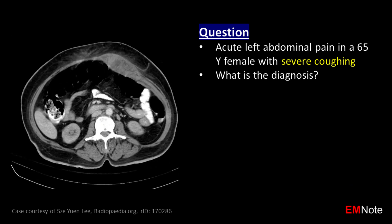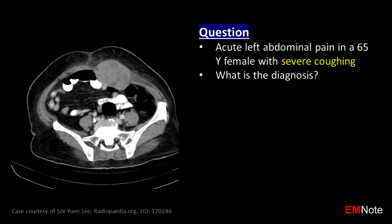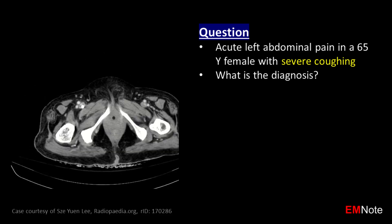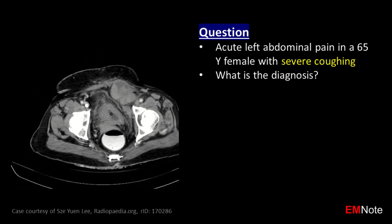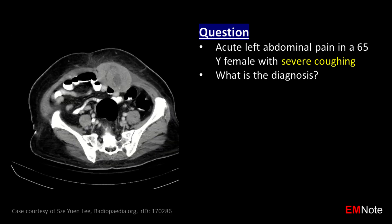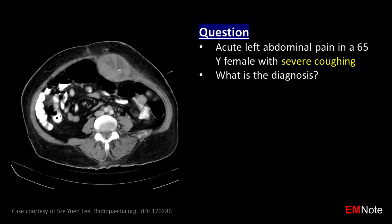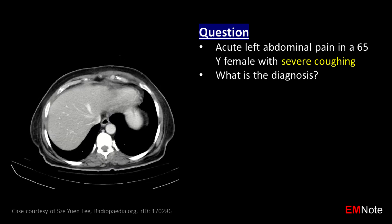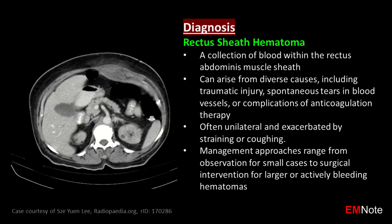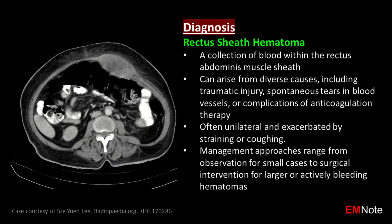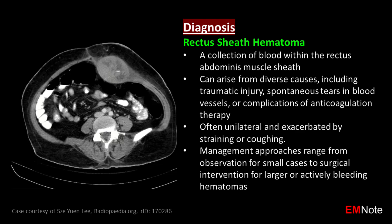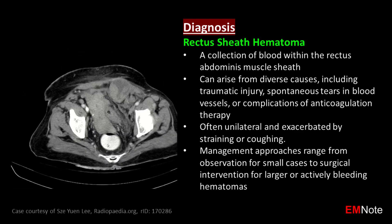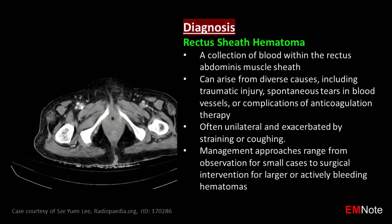A 65-year-old female presents with acute left abdominal pain and severe cough. What is the diagnosis? The diagnosis is Rectus Sheath Hematoma — a collection of blood within the rectus abdominis muscle sheath.